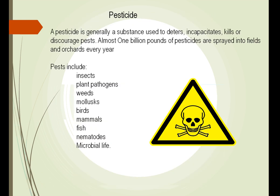What is a pesticide? It comes from the Latin name meaning killing pests. This means that it is used to deter, incapacitate, or kill pests.